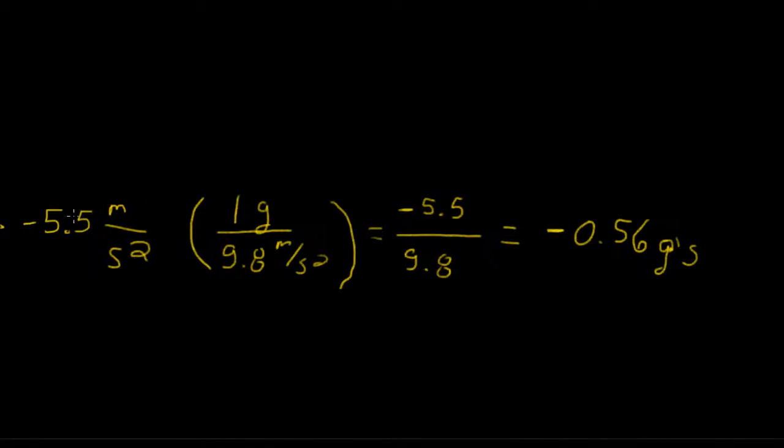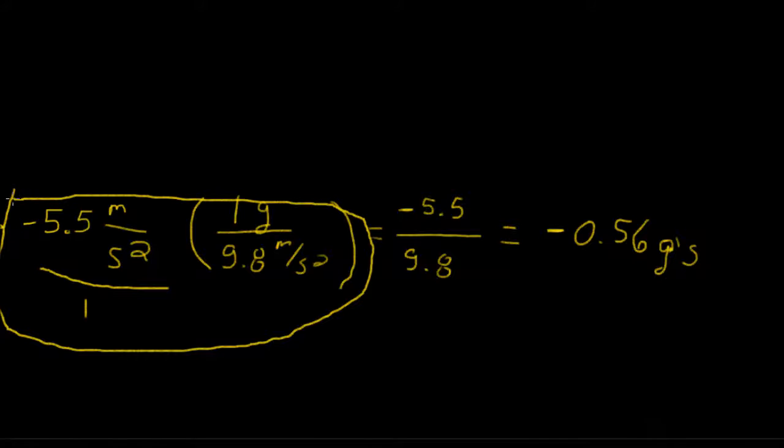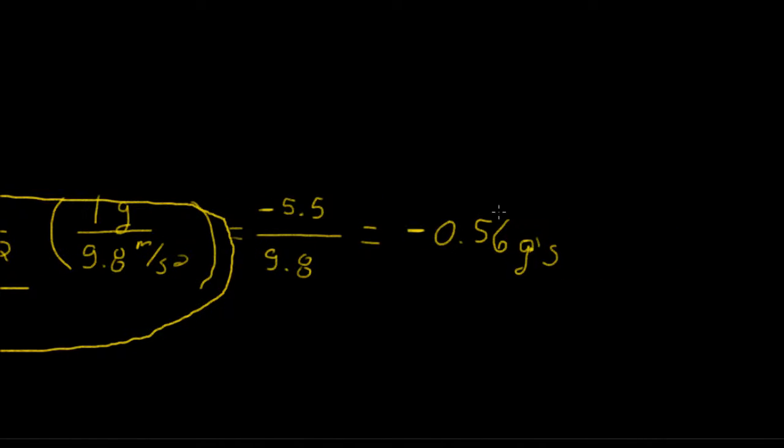So we just set it up and multiply it out. So 5.5 times 1 is going to be 5.5. Now this whole thing's over 1, so that'll be over 9.8. You can plug this into your calculator, or if you're already familiar, you can just jump right to here if you know conversion factors really well, and that gives you an end answer of negative 0.56 g's.